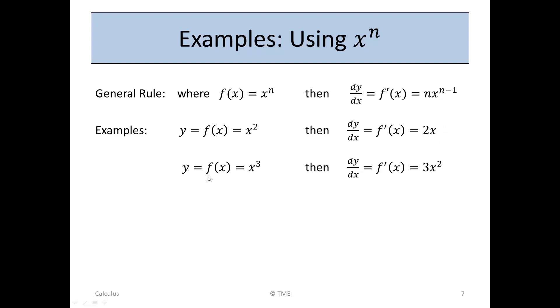If y equals f(x) equals x cubed, then dy/dx is: we take down the number 3 as a multiplier, and we reduce 3 by 1 to 2. So it's 3x squared.